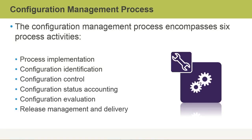The configuration management process is made up of six process activities. The first one is process implementation, then configuration identification, then configuration control, configuration status accounting, configuration evaluation, and finally release management and delivery. Now let's take a look at each of these different activities in order.